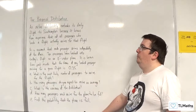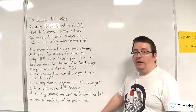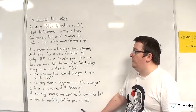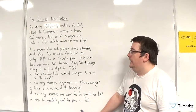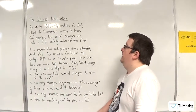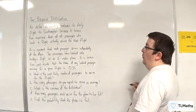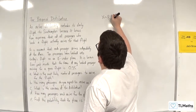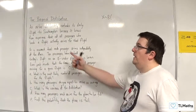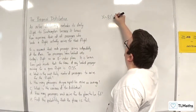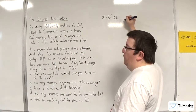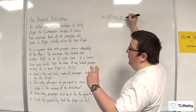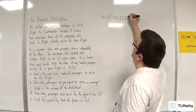Ten passengers have booked onto today's flight on an eight-seater plane. It is known from past records that the chance of any booked passenger arriving for a given flight is 0.35. So what we're dealing with is a binomial distribution where n is 10. We've got 10 passengers who either arrive or they don't arrive, so the probability of success — of arriving — is 0.35.